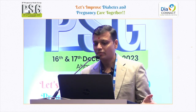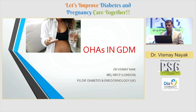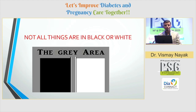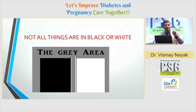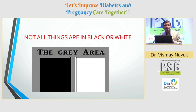Today I will be discussing about the OHAs in GDM. We know that not all things are in black or white — some things lie in the gray area. This topic lies in the gray area; it is slightly controversial, but what I'll do over the next 10–15 minutes is try to put things either in the black or the white area.